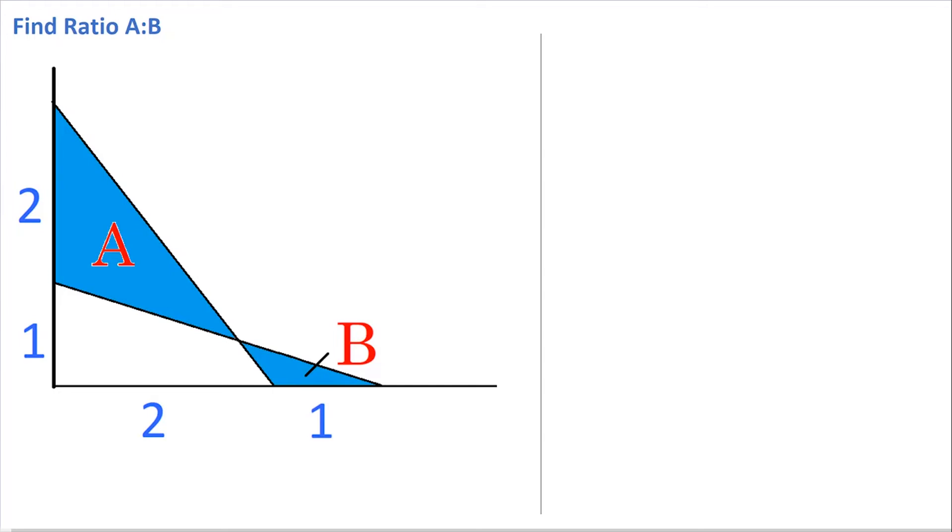Hi, welcome back. Today I'm going to have a go at this problem where we've been asked to find the ratio between area A and area B. Let's begin by adding in this line which goes through the point where the two triangles cross.